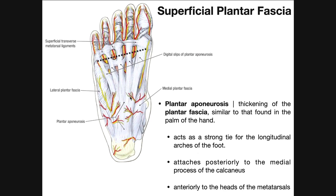The plantar aponeurosis has extensions that go out to all of the digits — the great toe or hallux, the second digit, third digit, fourth digit, and the fifth digit. There's also lateral plantar fascia and medial plantar fascia. The plantar aponeurosis acts as a strong tie for the longitudinal arches of the feet. It attaches proximally to the medial process of the calcaneus, and anteriorly to the heads of the metatarsals for each of the five digits.